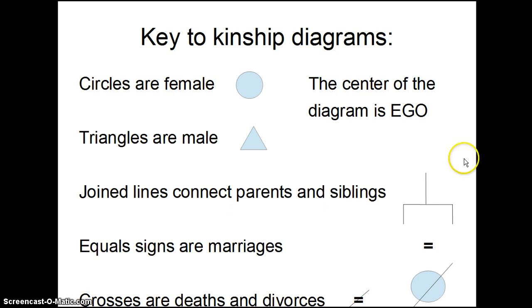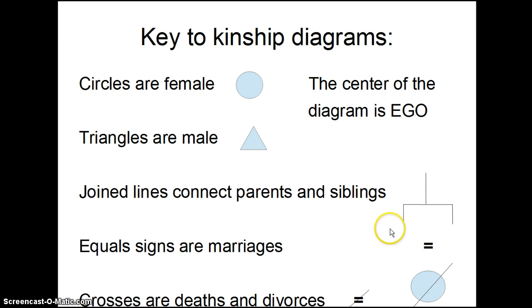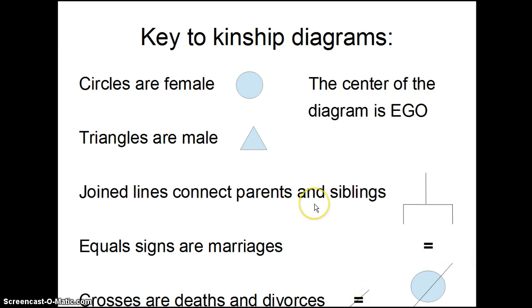Parents, when they have children, split off into separate tines, and each tine is one of their children. If two people marry, they get an equal sign. If they divorce, they get a cross sign. And if someone dies, they get crossed out too. Life is harsh.